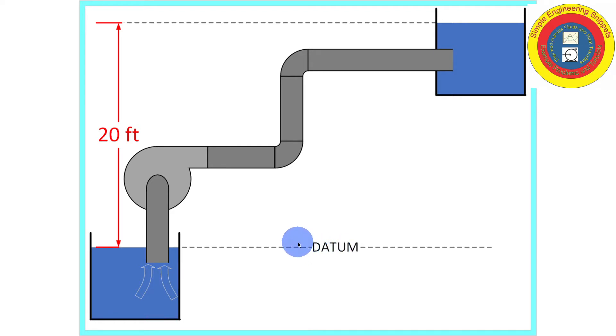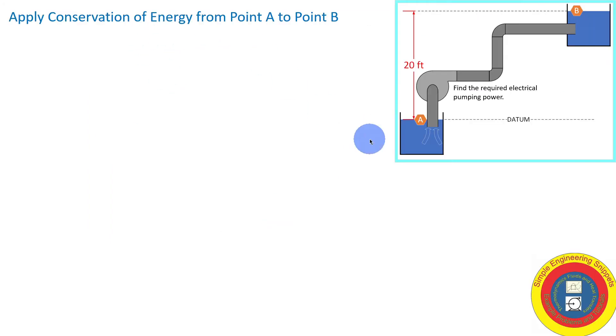We're going to be applying conservation of energy across this pump, so let's select alpha as the surface of the water in the lower tank, and bravo the surface of the water in the upper tank. So let's apply conservation of energy from point alpha to point bravo.